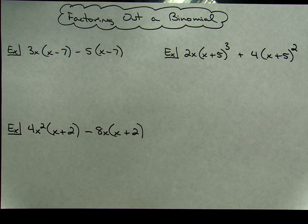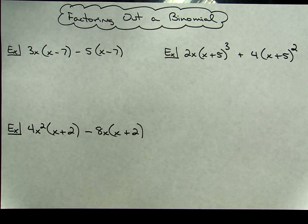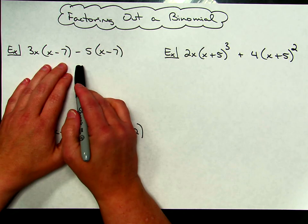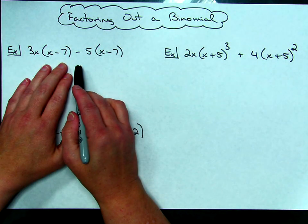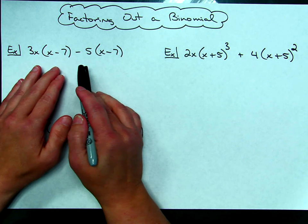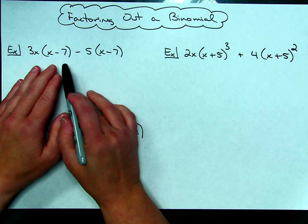Okay, today we're going to take a look at factoring out a binomial from an expression. For this first example right here, if I'm going to factor out a binomial, I have to realize that when I factor things out, I factor them out from each individual term that happens to be in the polynomial.